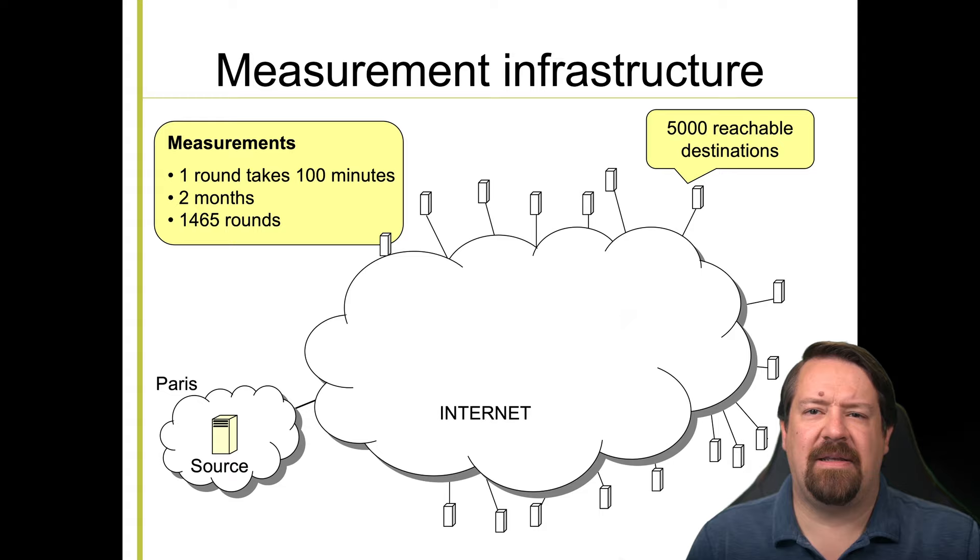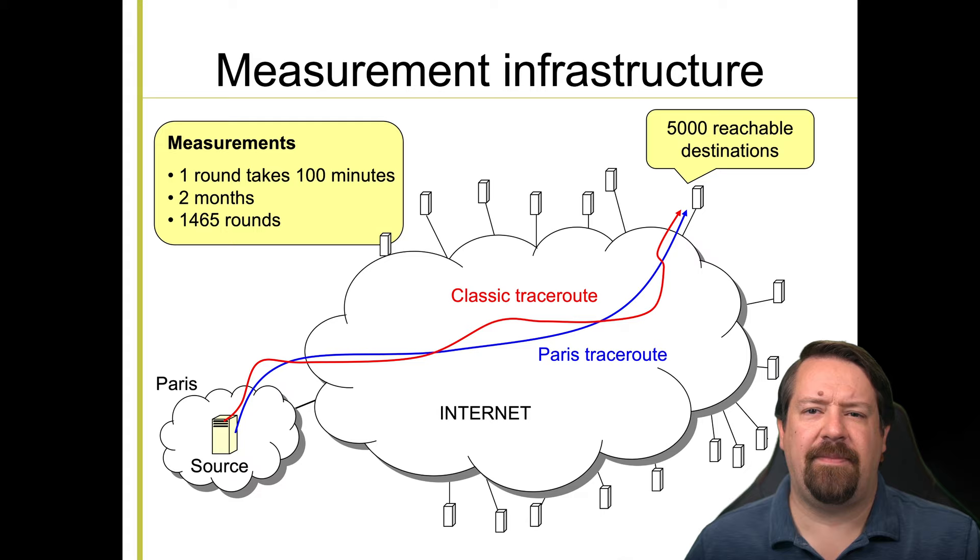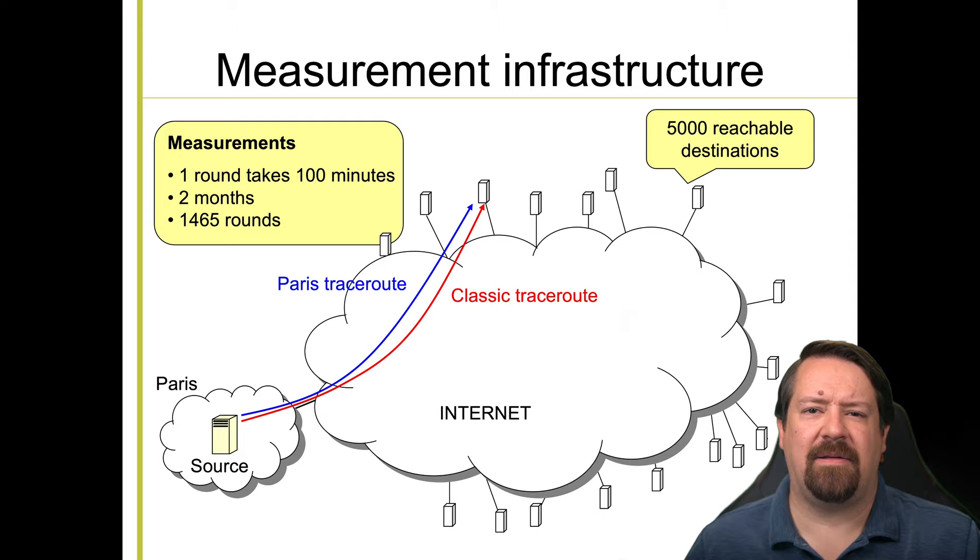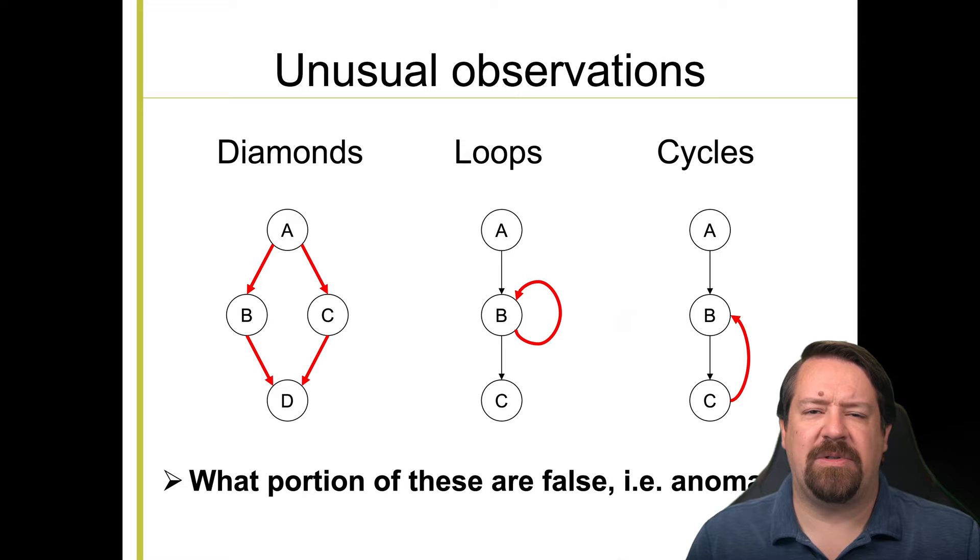Now that we've seen the design of this tool, we can talk a bit about the measurement infrastructure that the author set up in order to test it. They measured from one source through the internet to 5,000 destinations running both traditional tracerout and Paris tracerout. So the expectation is that these will discover the same paths except in the cases where load balancing takes place. Of course, it turns out that load balancing is highly prevalent in the internet. So this affects a large portion of the paths. As we said, they cannot address all the causes of anomalies in tracerout data. They're specifically looking at the anomalies that are observed when running classic tracerout over per flow load balanced paths.